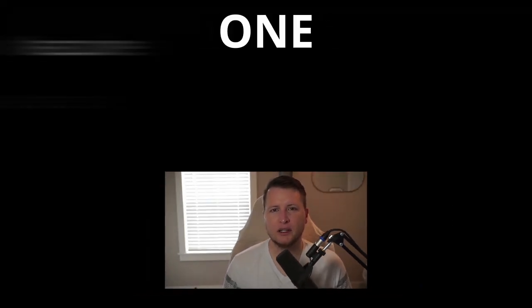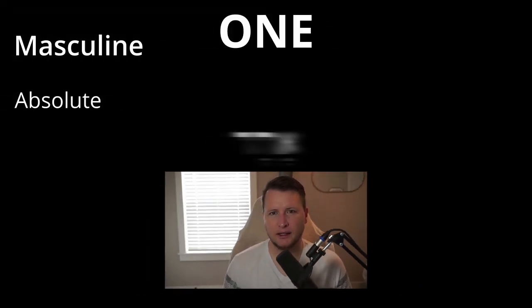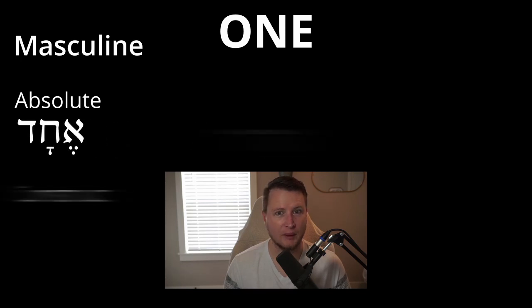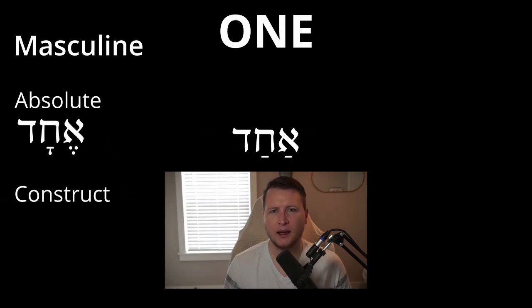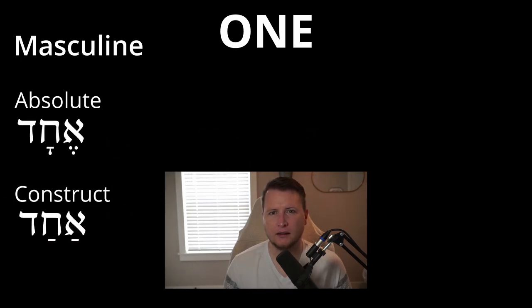What's important to recall here is the spelling of one and the spelling of two. After that, it's pretty straightforward — three through ten. The masculine uses Dalet. Echad — one, absolute. Echad — one, construct.